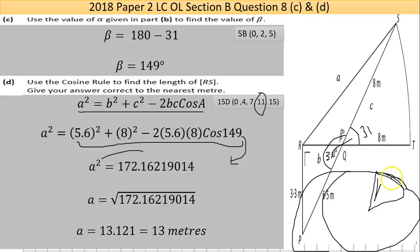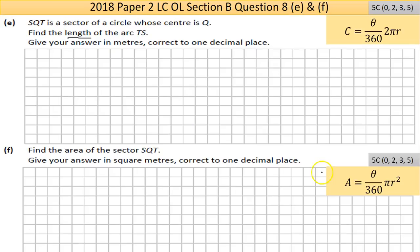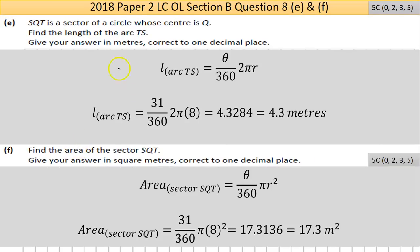And then in the next part you're looking for the area of that slice. Let's do it. So the length of the arc TS equals the angle divided by 360 multiplied by the circumference or length. Put the numbers in, so the angle is 31, the radius is 8.